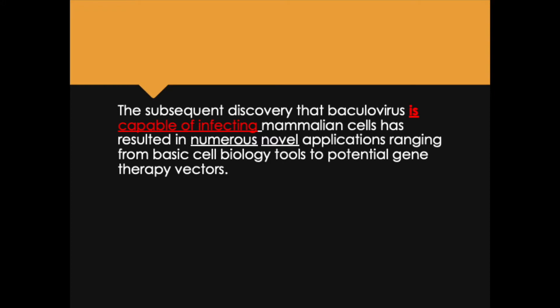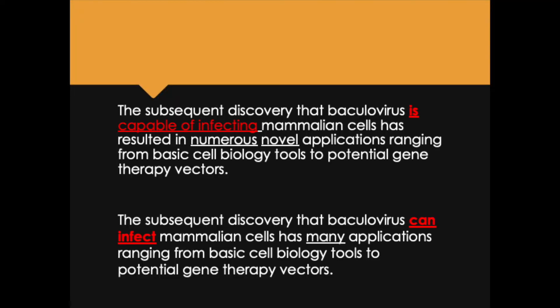The exception is the materials and methods section, where the passive voice is preferred by almost all authors — so I'm not suggesting you edit that section this way. Here's an example of removing a passive verb: 'The subsequent discovery that baculovirus is capable of infecting mammalian cells has resulted in numerous novel applications ranging from basic cell biology tools to potential gene therapy vectors.' The passive construction is 'is capable of infecting.' Simply change it to 'can infect': 'baculovirus can infect mammalian cells.' I also changed 'numerous novel applications' to 'many applications' — one fewer word and one fewer polysyllabic word.